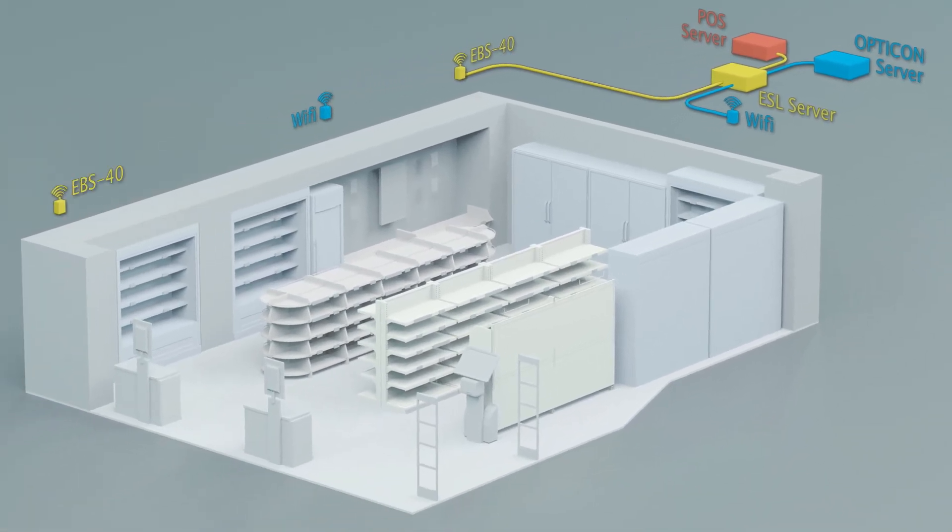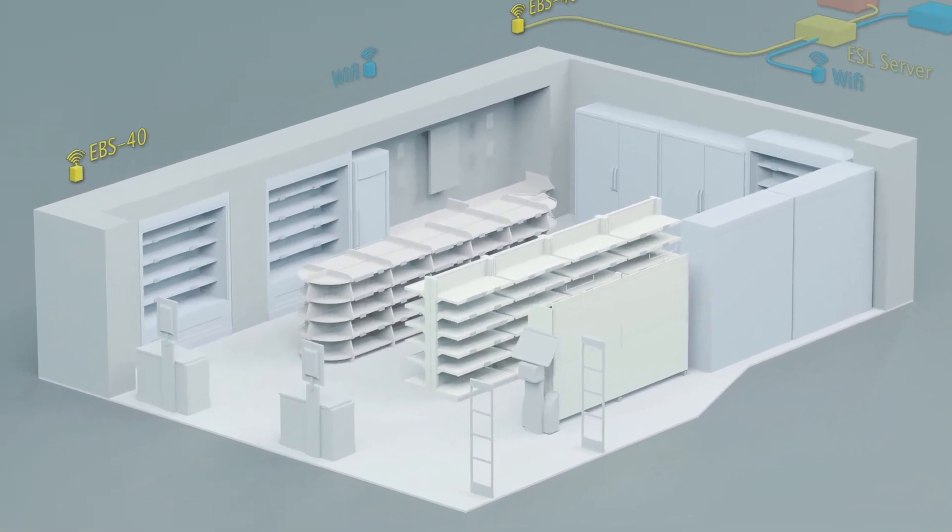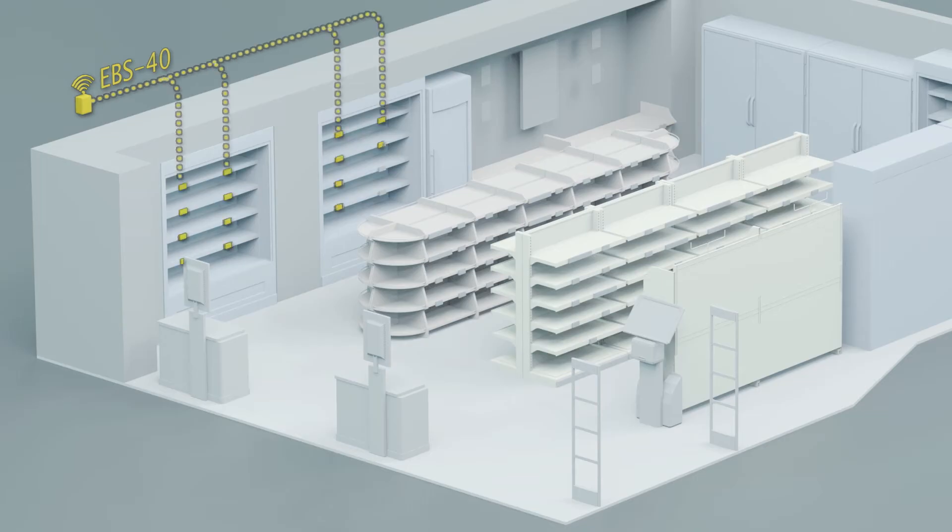This server software communicates to an EBS40 or EBS50 base station which can connect up to 2500 labels. The powered electronic shelf labels with active NFC enable the chosen payment method and provide a low power, secure, encrypted bi-directional data connection with the base stations.